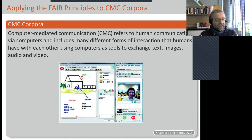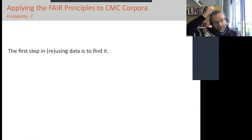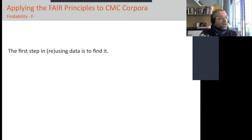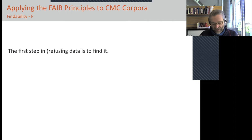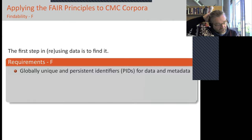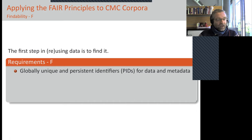The FAIR principles start with F, which is where you'd say: I want to use data, and obviously the first step is to find it. The requirement defined in the FAIR principles is that the data should be assigned a PID — a persistent identifier.